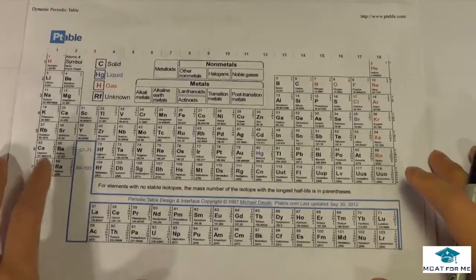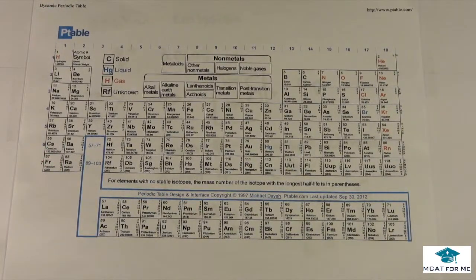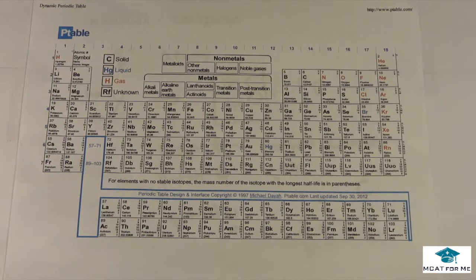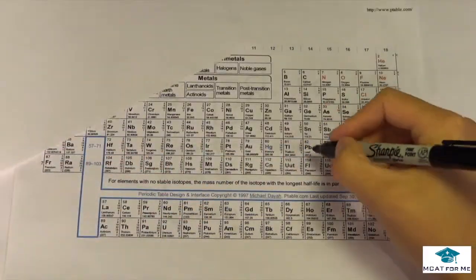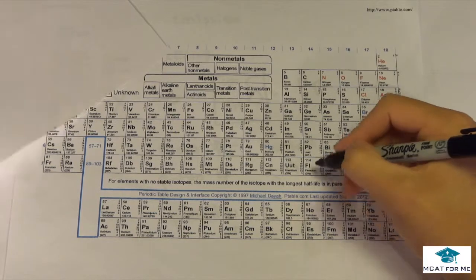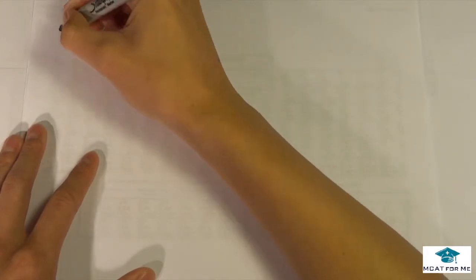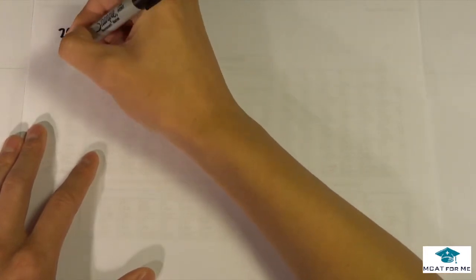So what we want to do is we want to see this Fl, and if we look on our periodic table, Fl is right there. So Fl, we see that has a proton number, I don't know if you guys can see it, is 114 and a mass number. Well the mass number was given as 290. So we know that Fl is 290 and 114.